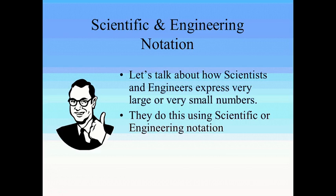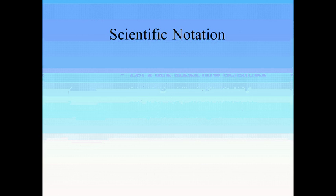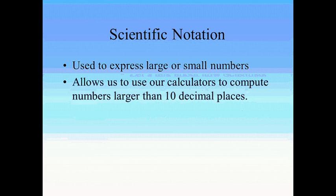Alright, we're going to talk about scientific and engineering notation, how engineers and scientists express either very large or very small numbers. So first of all, let's review scientific notation. There's a number of sites on the web where you can find out about scientific notation. We'll just do a real quick review. Scientific notation is used to express very large or very small numbers. It allows us to use our calculators to compute numbers larger than 10 decimal places or smaller than the 10th decimal place. Most calculators can't do that without some kind of assistance or special notation. And it's all based on using powers of 10.